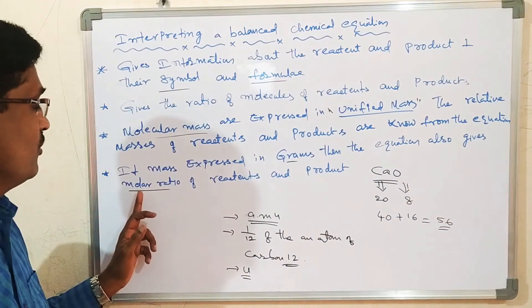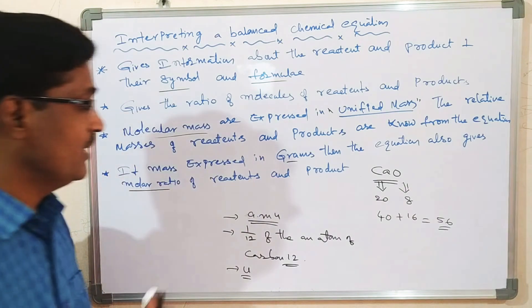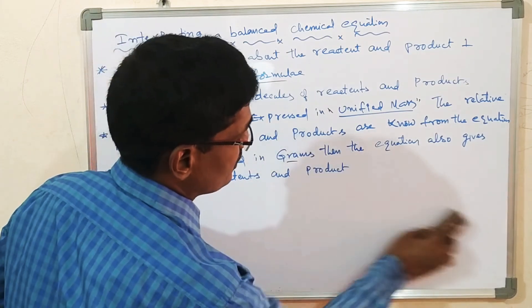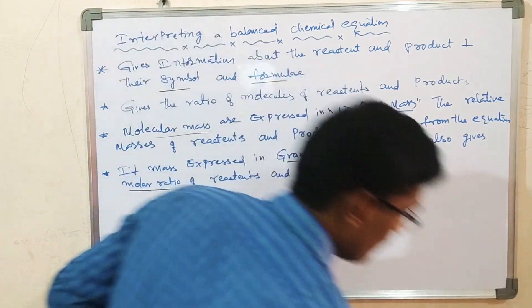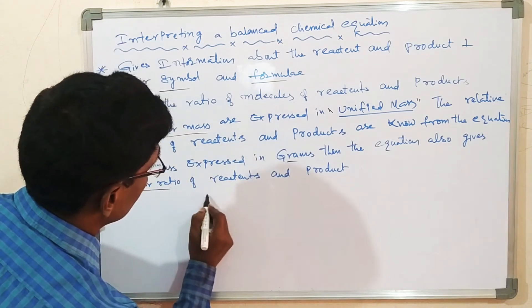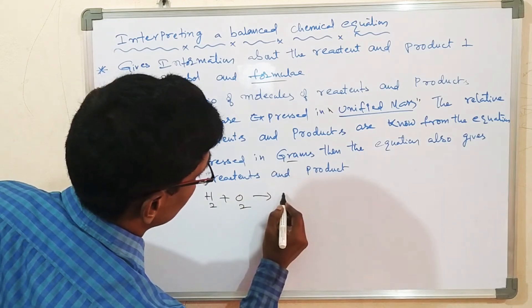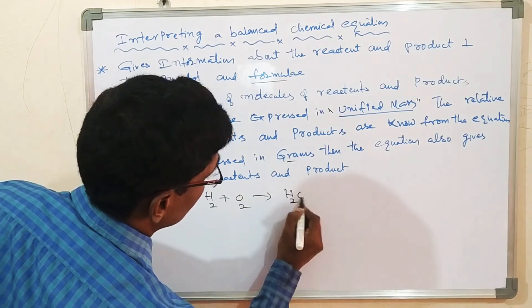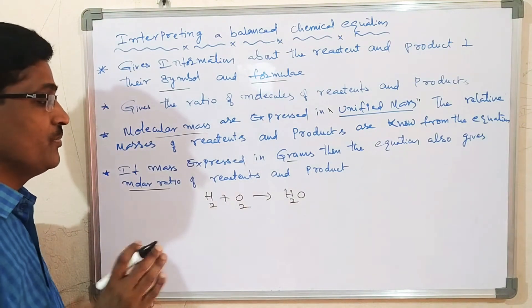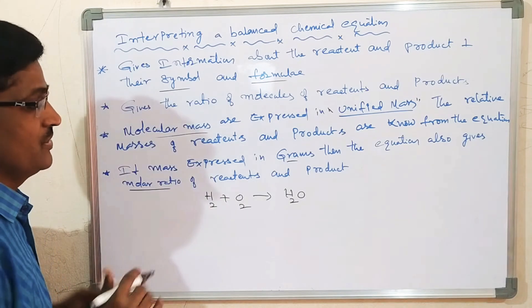Now let's understand what molar ratio is. I will give an example. The equation is: H₂ + O₂ → H₂O. By looking at it, you can tell it is an unbalanced equation.